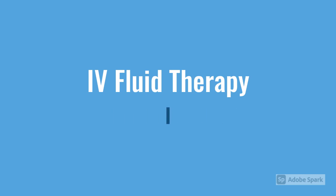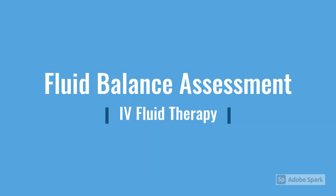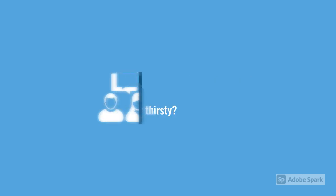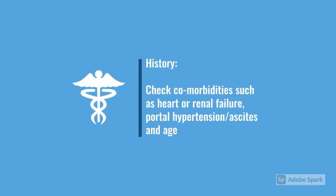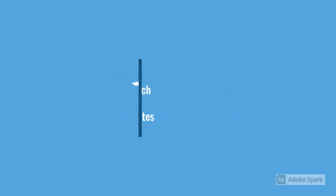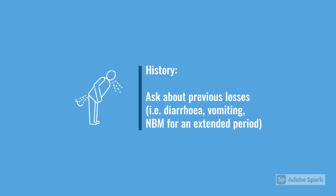When assessing a patient's fluid balance, take their history. Someone who's really thirsty is more likely to be hypovolaemic. Comorbidities matter — if they're in heart failure, renal failure, or have portal hypertension or ascites, those things will affect their fluid balance. Those are patients we'll be naturally more cautious about giving significant volumes of fluid. Looking at their previous losses as well — if they've had diarrhoea or vomiting, or been unwell for an extended period, they're going to be low on fluid.